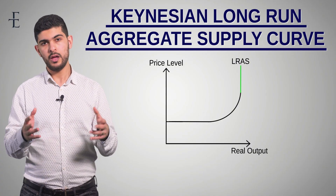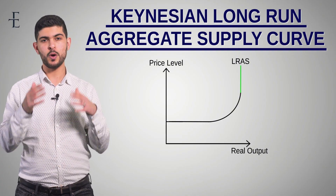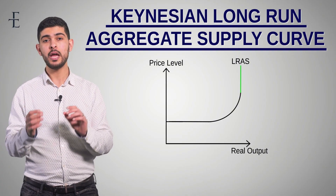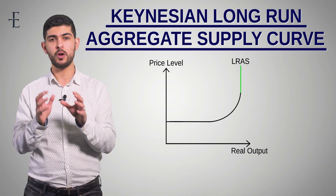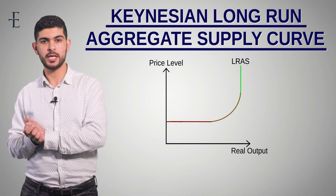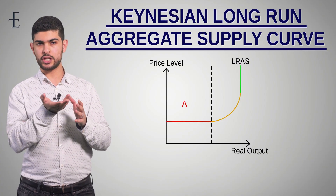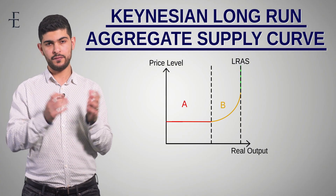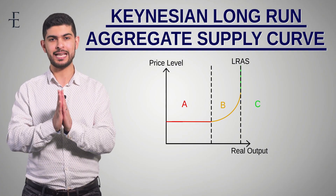We're always aiming for the top grade, so I always want you to be able to talk about the LRAS curve in terms of the technical terminology. We're going to split it up into three sections: Section A, where it's perfectly elastic; Section B, where it's starting to bend; and finally Section C, where it is perfectly inelastic.